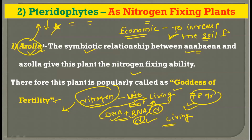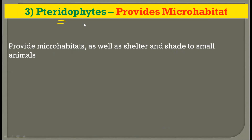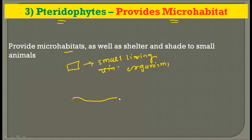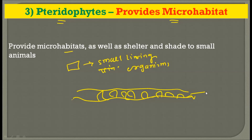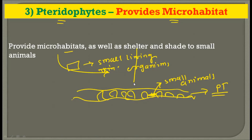Azolla and pteridophytes also provide micro habitats to other small animals. On the floor of a forest, many ferns occupy almost all the space. These pteridophytes create a very dense cover on the forest floor, providing micro habitats, shelter, and shade to small organisms. This is a very important ecological function of pteridophytes.